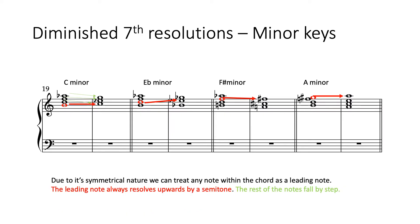Of course, we can resolve it in the same manner to the minor key equivalents. So we've got that diminished seventh to C minor, to E flat minor, to F sharp minor — written as F sharp minor because G flat minor doesn't really exist — and to A minor. So from that one diminished seventh chord, you can resolve to eight different places. It's a very versatile chord harmonically and also great for building tension.